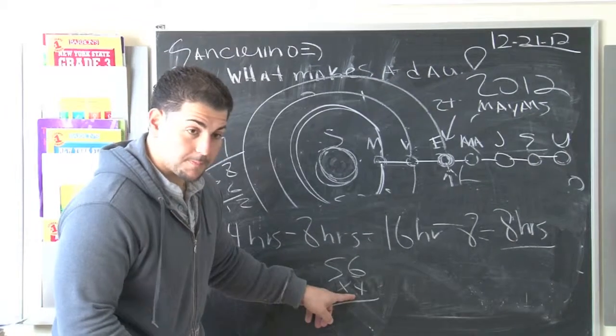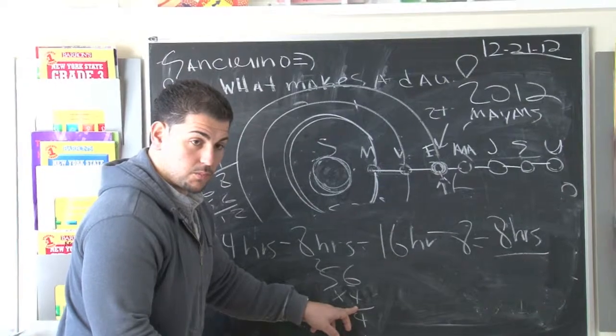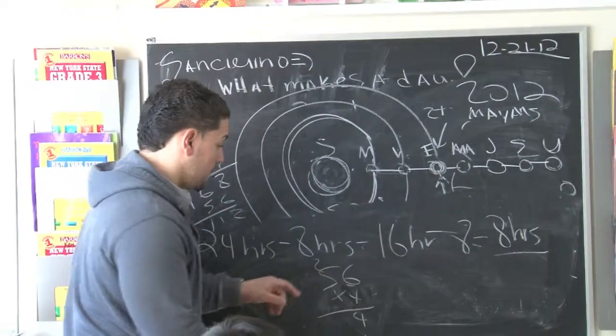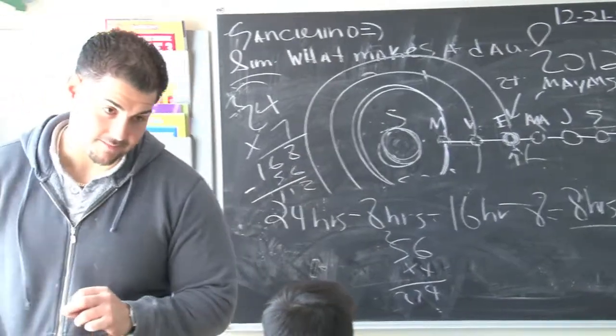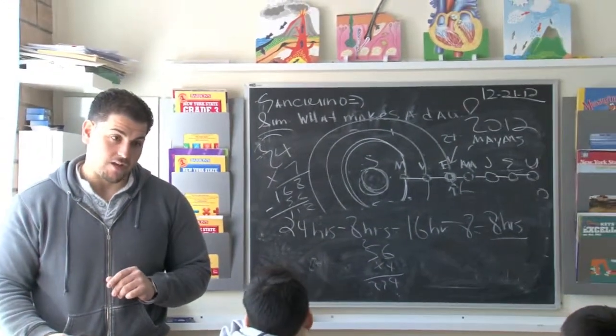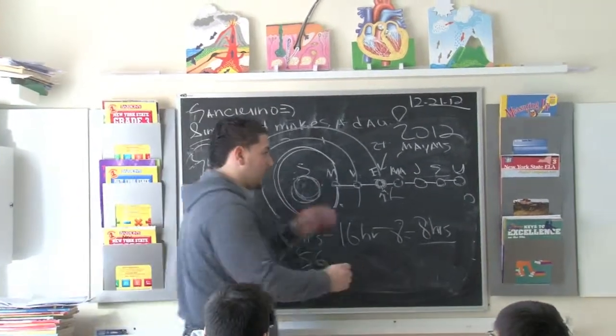56 times 4? 24. Plus 2? 22. That means you sleep 224 hours a month. Why? We're lazy. Now, think about your life though. 224 hours a month. Last one.